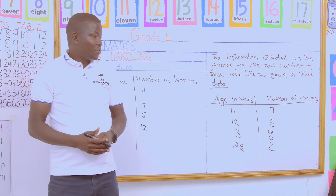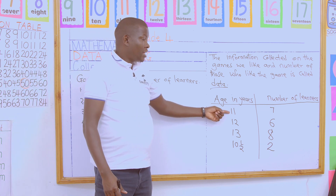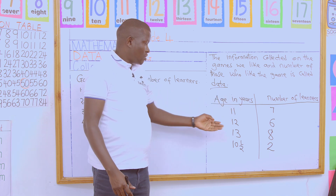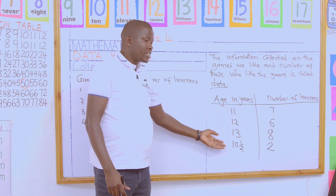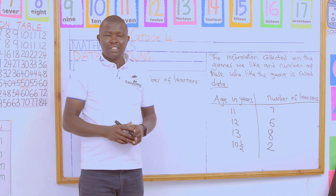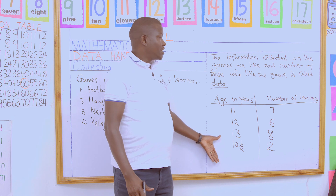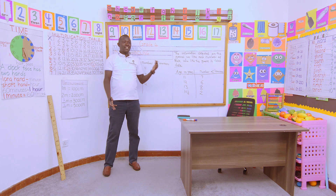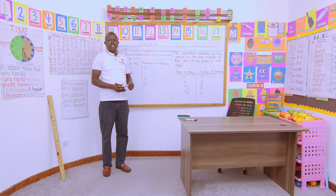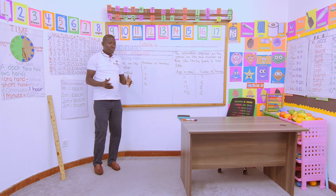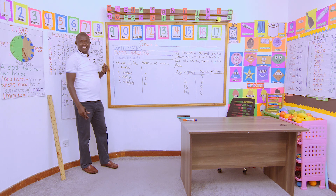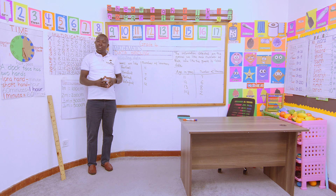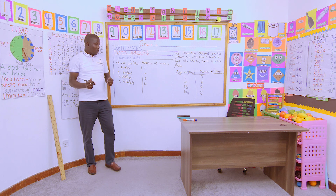This is the information we have collected about our ages in the class. Those who are 11 years old are seven; those who are 12 years old are six; those who are 13 years old are eight; and those who are 10 and a half years old are two. This information is what we call data. The data we have collected is the age of learners in years versus the number of learners of that same age. We have done data collection.